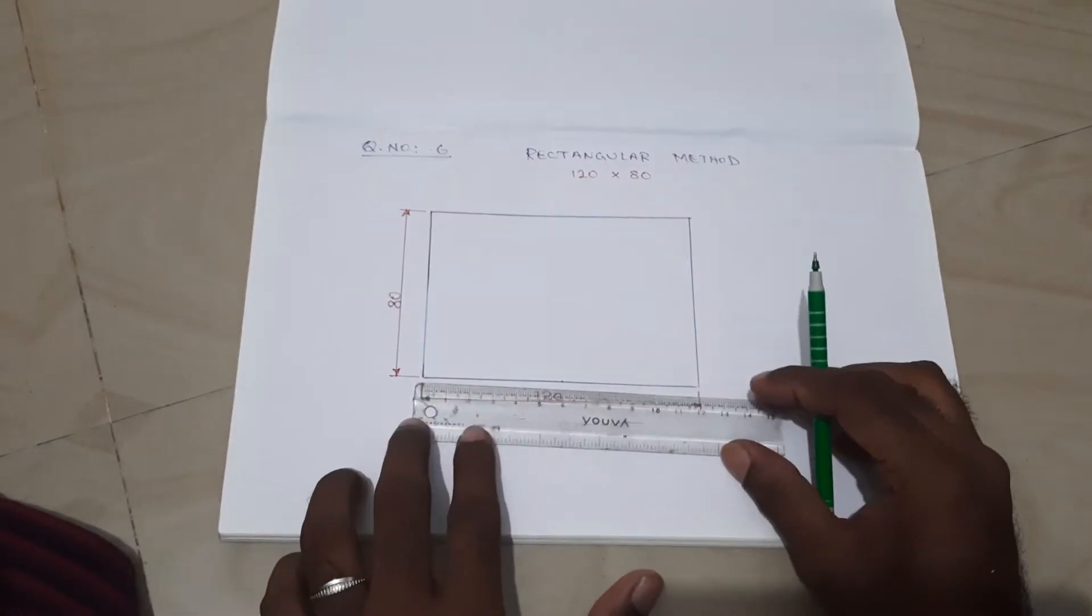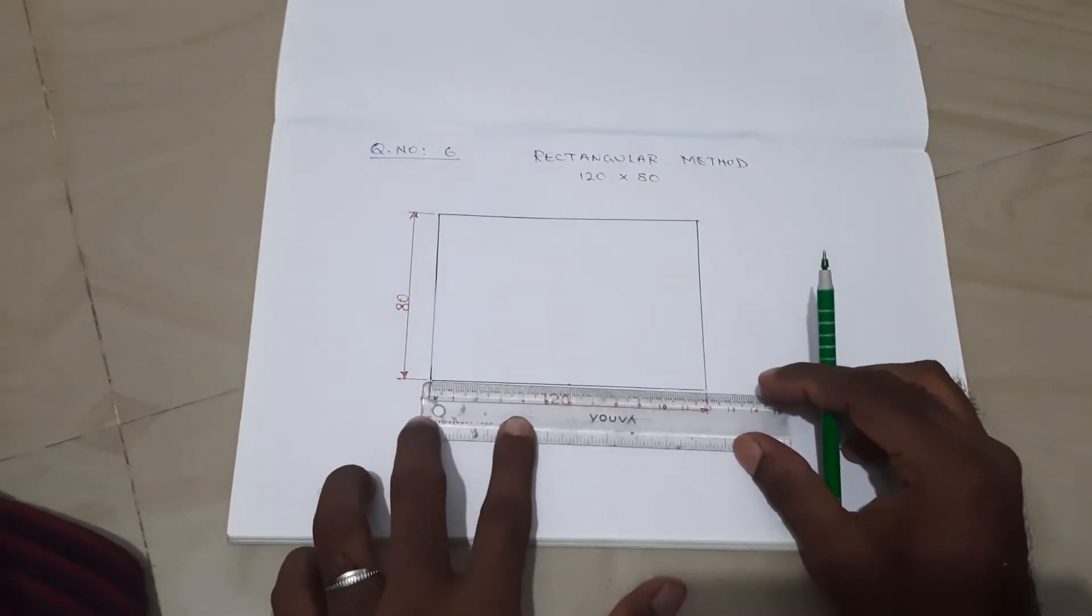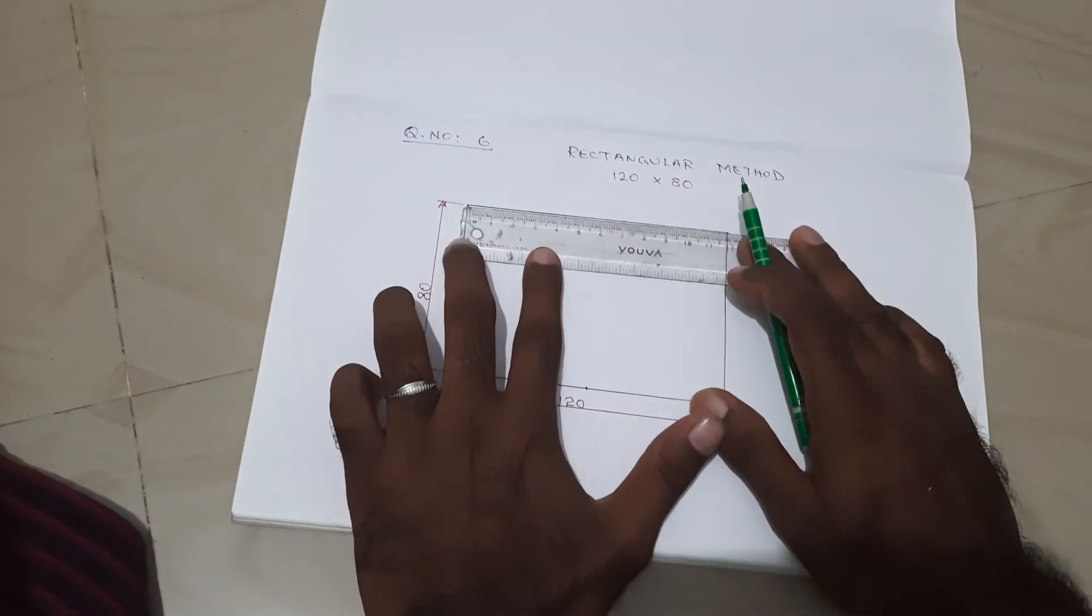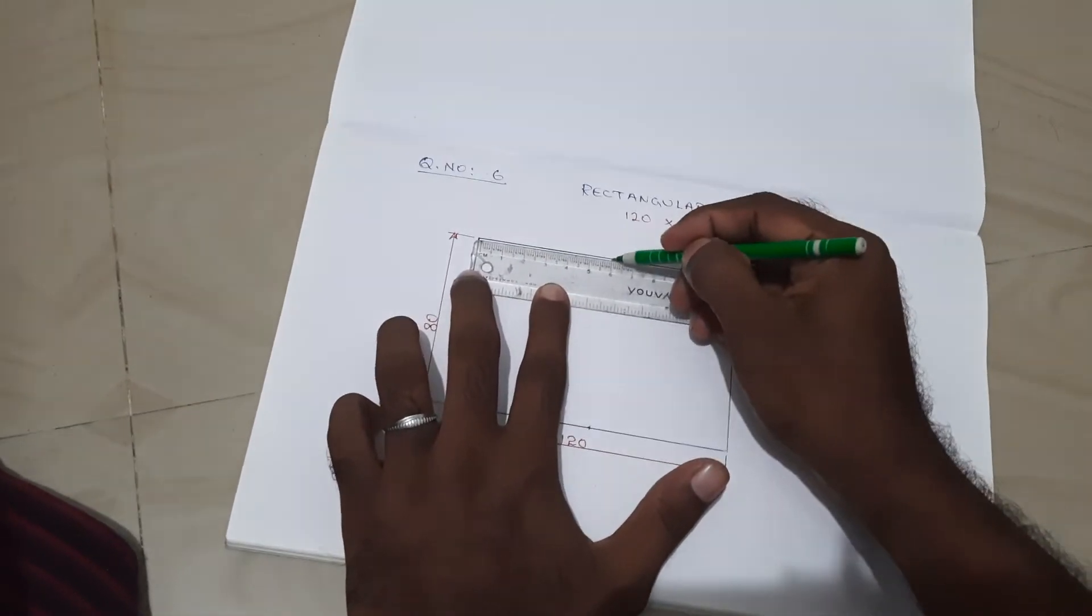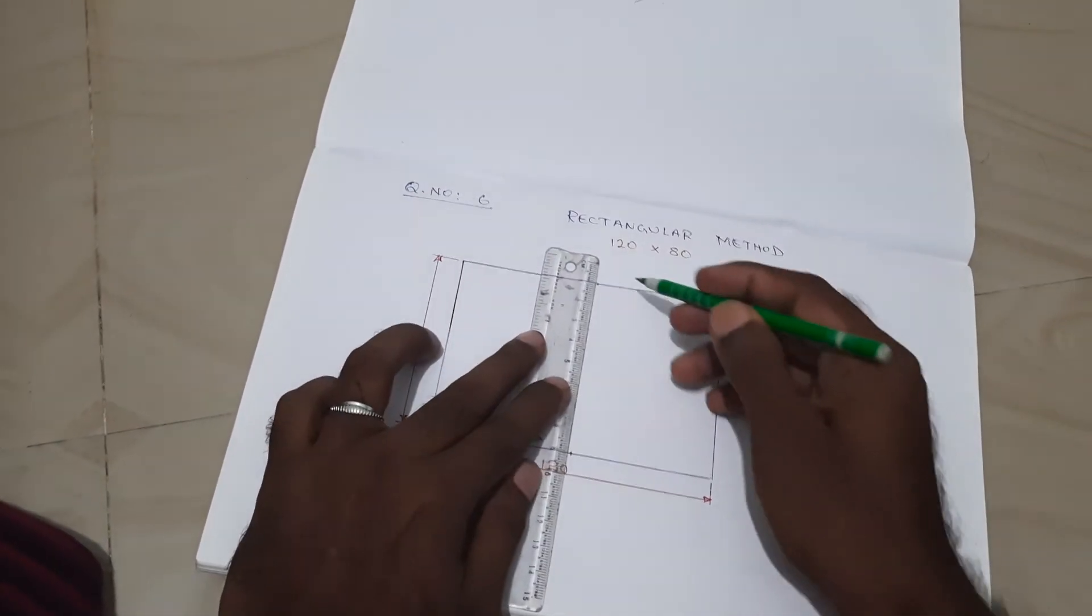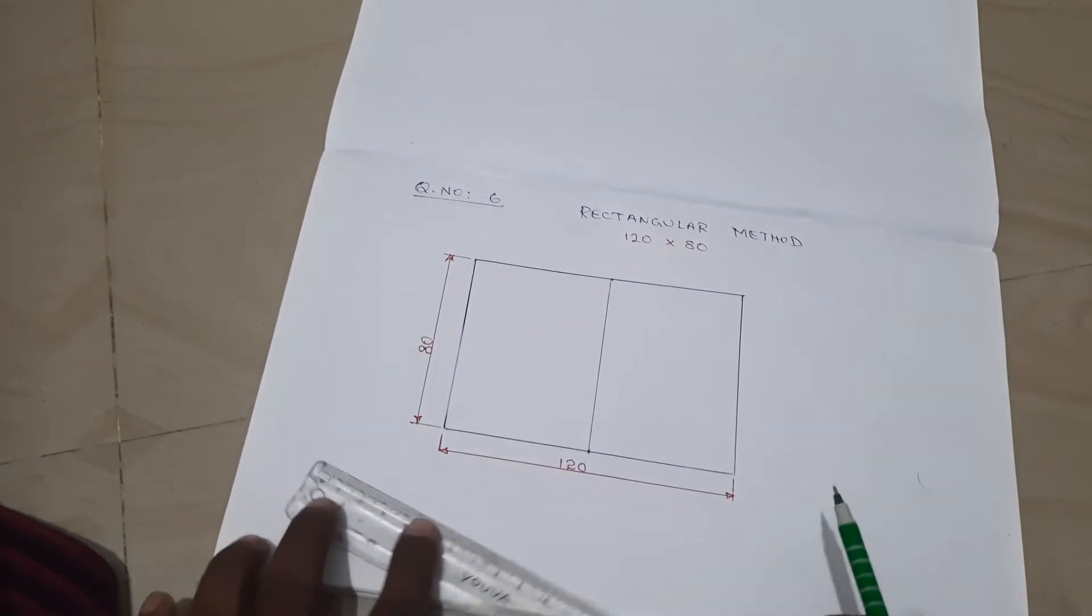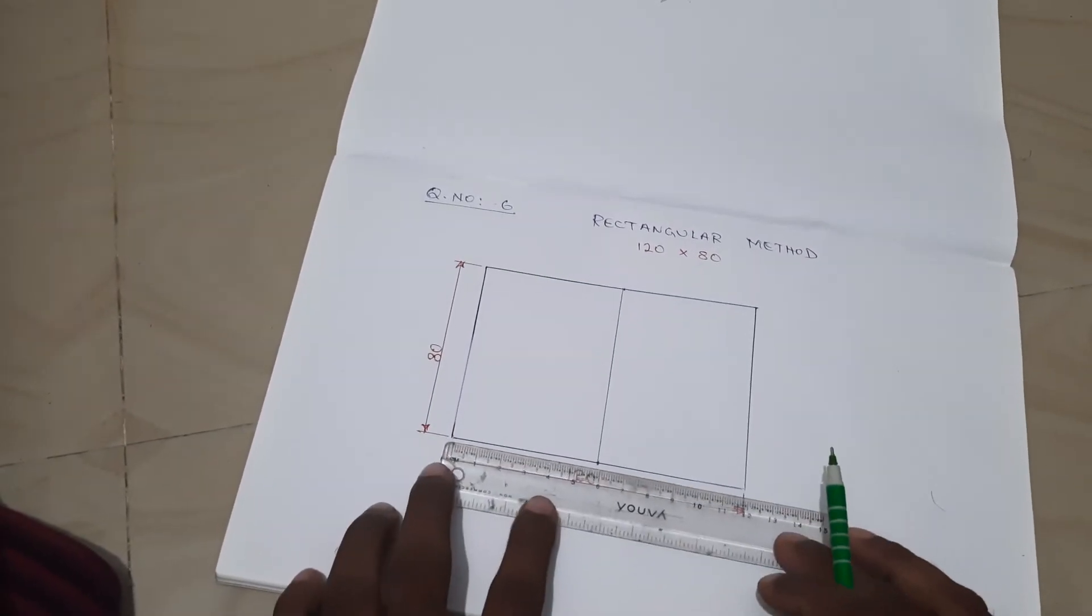For the horizontal line, I am choosing half of the value of 120, which is 60. The top side also finds the half of the value, 60. Then make the rectangle into two boxes. After that, the smaller rectangle should be divided into four equal segments.